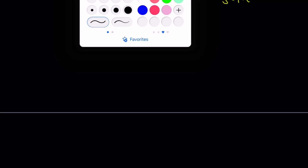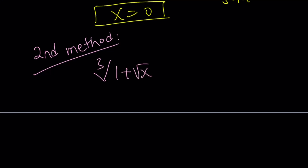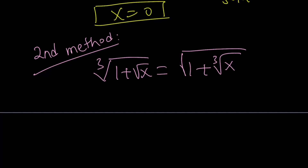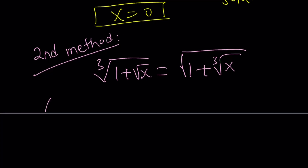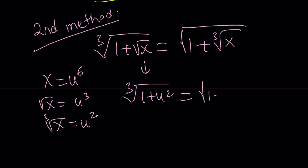Let's talk about the second method. I'm going to set something that will get rid of the radicals inside the radicals. I have a square root and a cube root, and the LCM of 2 and 3 is 6. So I'm going to set x equal to u to the 6th power. That gives us: square root of x equals u cubed, and cube root of x equals u squared, assuming x and u are non-negative. Making these replacements: cube root of 1 plus u squared equals the square root of 1 plus u cubed.